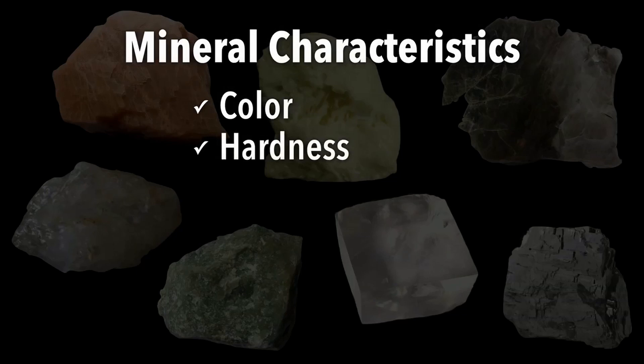We also look at hardness using the Mohs scale of hardness, with 1 being the softest mineral and 10 being the hardest. What we will often do is take a piece of glass, which has a hardness of 5.5, and try to scratch it with a mineral sample. If it leaves a scratch, that means the mineral is harder than the glass.